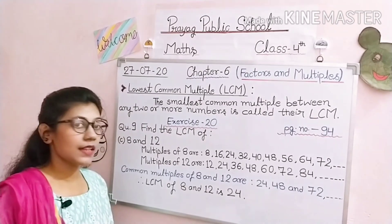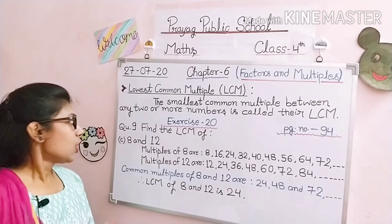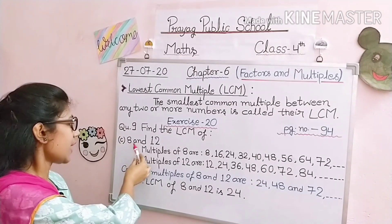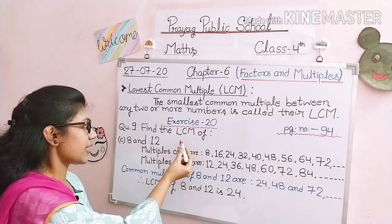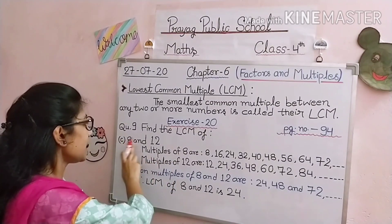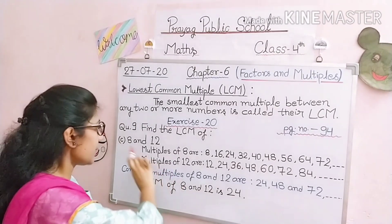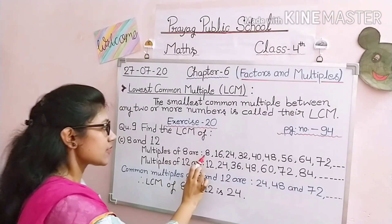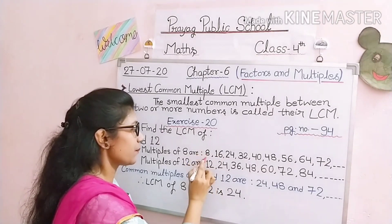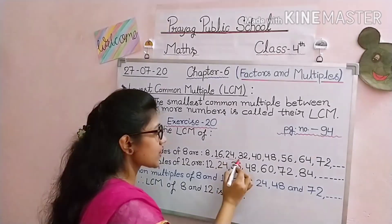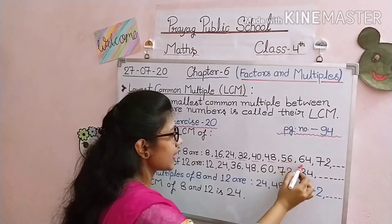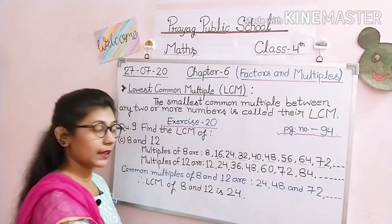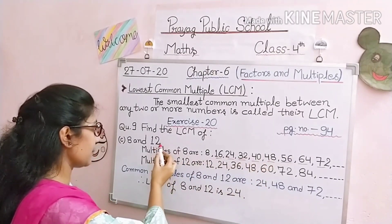Now we solve a question as an example from Exercise 20, page number 94 — question number 9C: find the LCM of 8 and 12. The first step is to find the multiples of both numbers. Multiples of 8 are: 8, 16, 24, 32, 40, 48, 56, 64, 72, and so on. As we learned, multiples are unlimited.